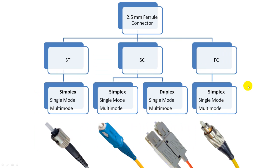Here is a single fiber connector which has a 2.5 mm ferrule. The ST connector has a bayonet coupling mechanism. It has a 2.5 mm ferrule and is available in simplex version only. The ST connector is available in both single-mode and multi-mode fiber.